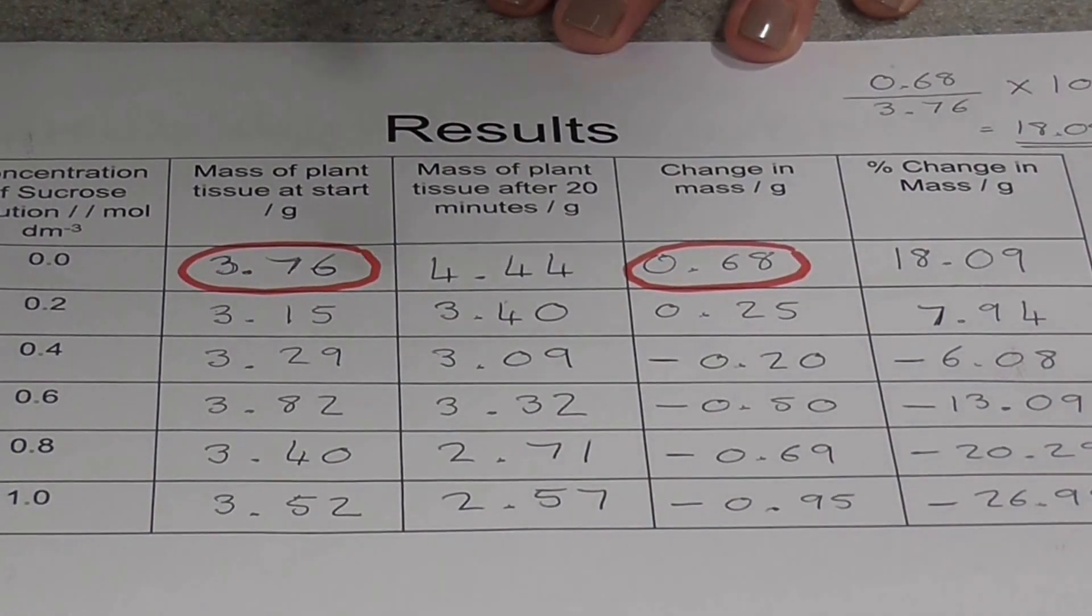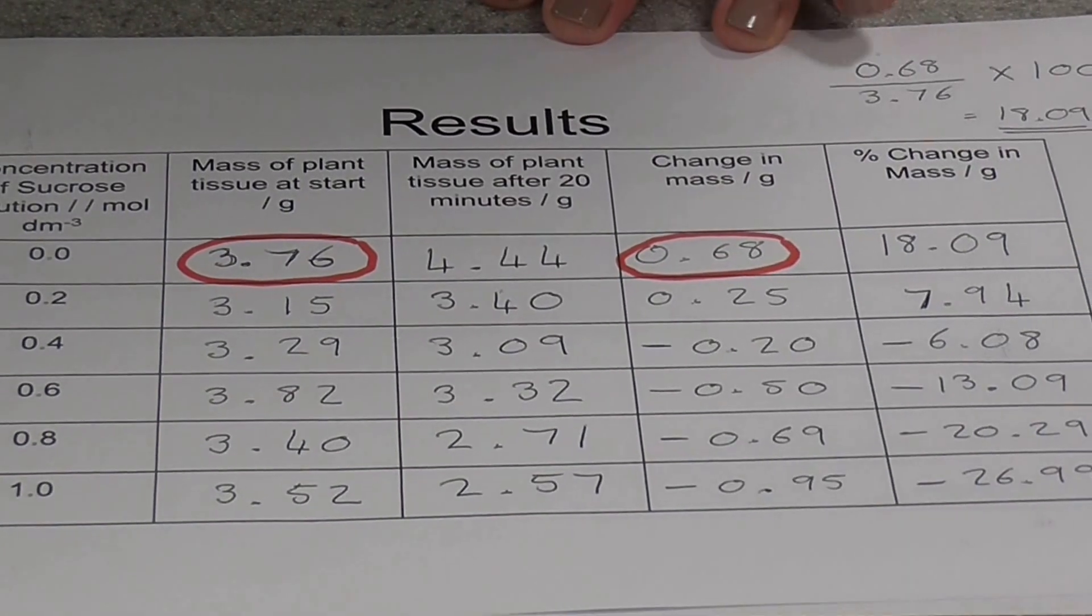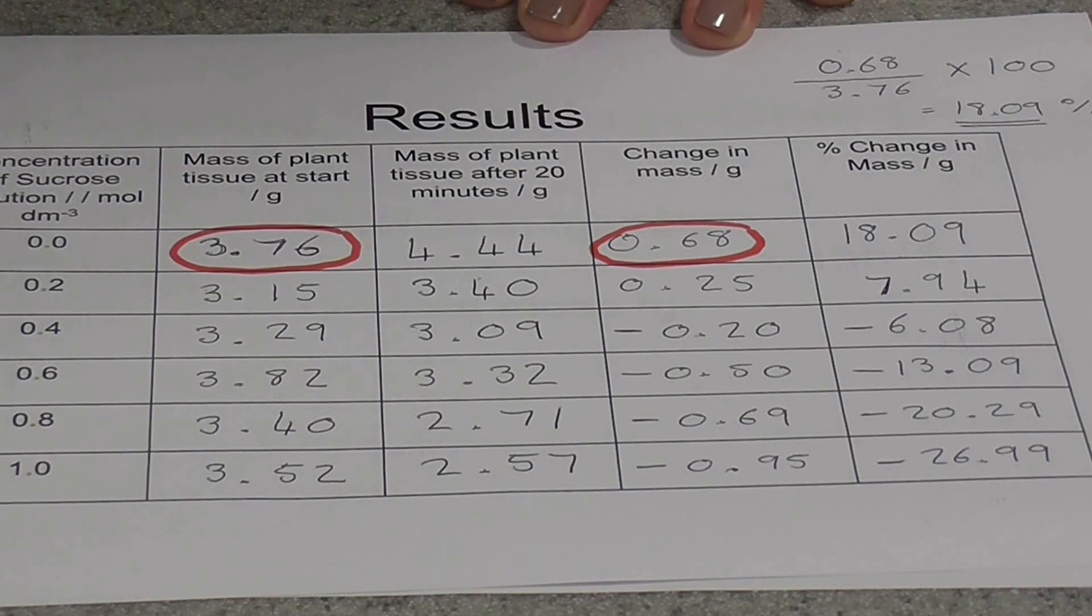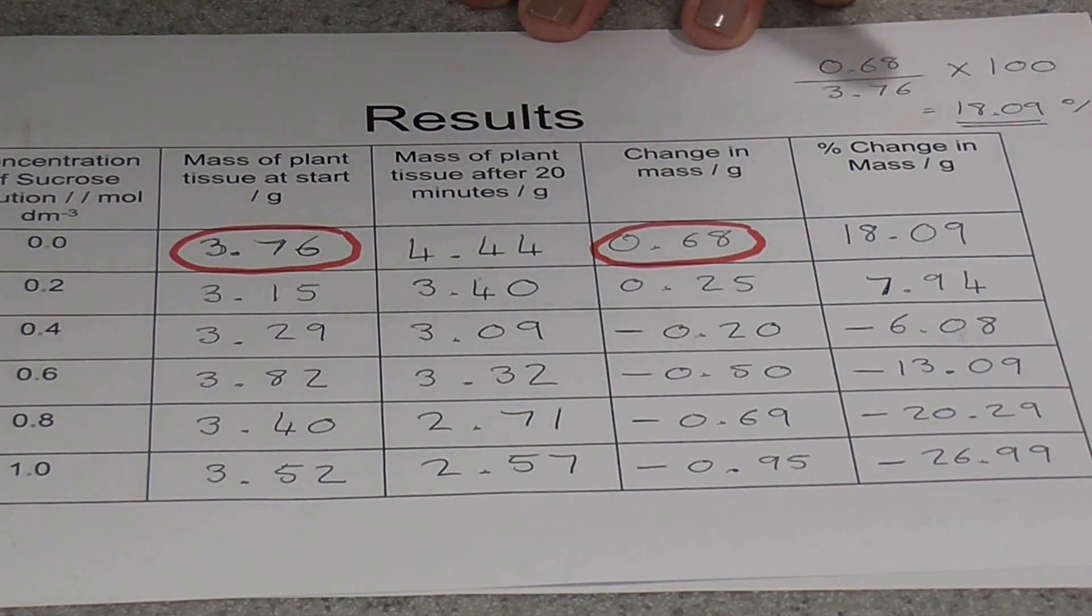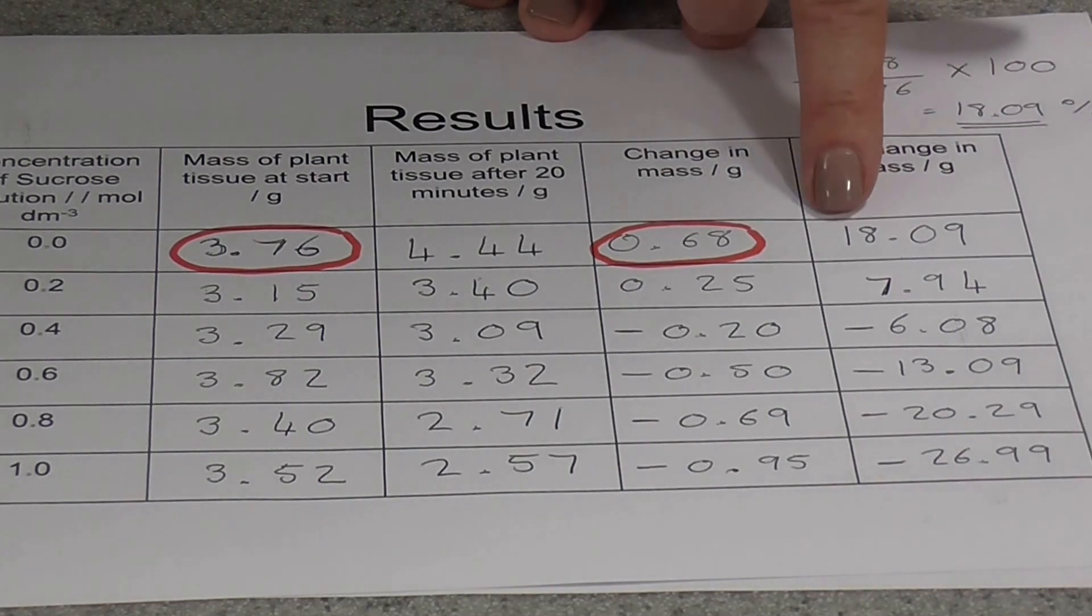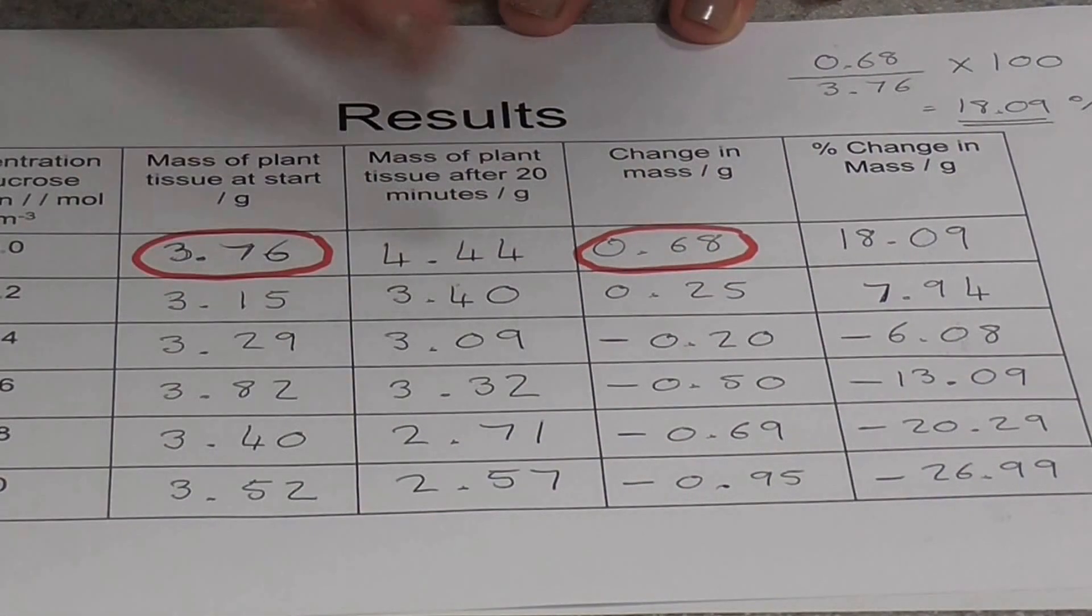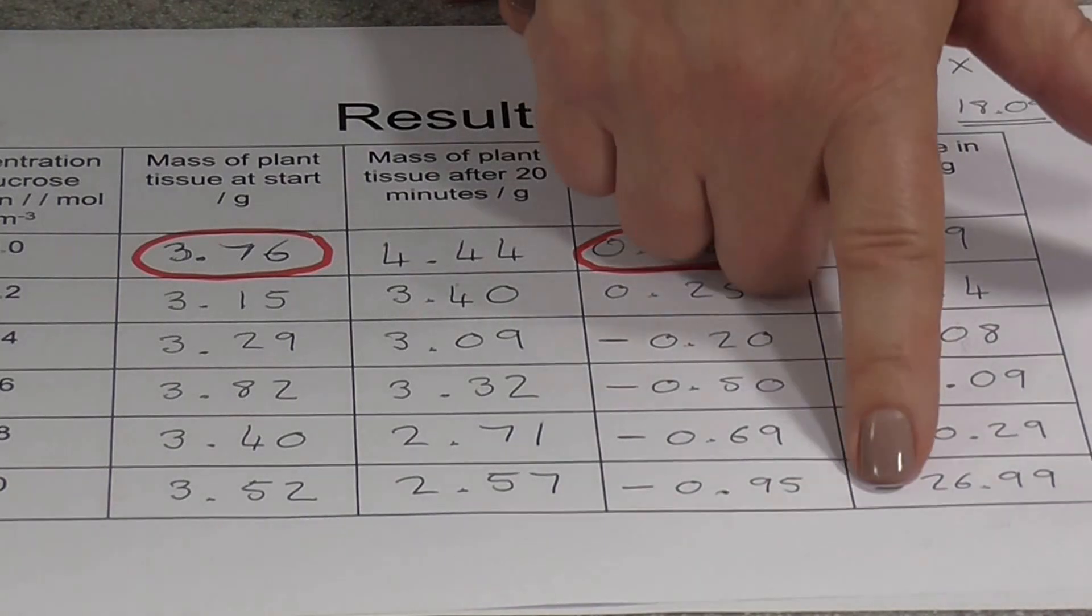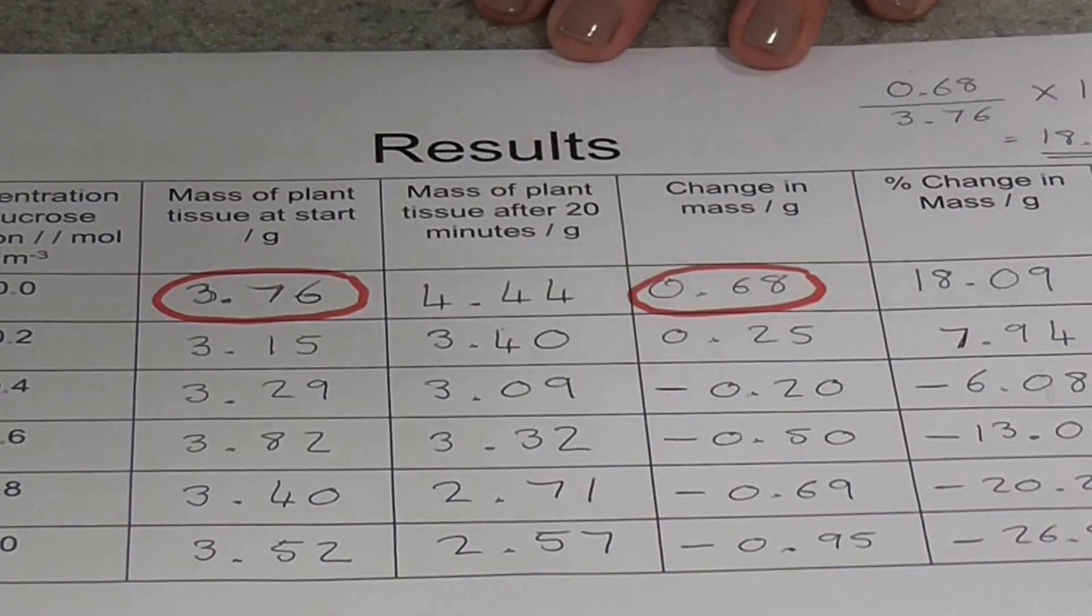You can see for the first chip here, the change in mass was 0.68 grams. So that's there on top of the calculation. The original mass was 3.76 grams. So I'm going to divide my 0.68 by 3.76. I'm then going to multiply it by a hundred, and you'll see that the change in mass of the first chip there was 18.09 grams. You're going to do this for all of the chips, and make sure that you're aware that some of them are minuses. Some of them have lost a certain percentage of weight.